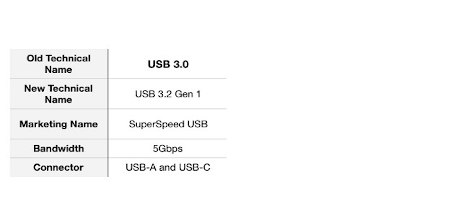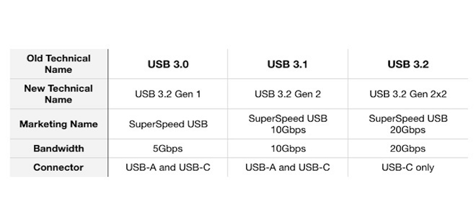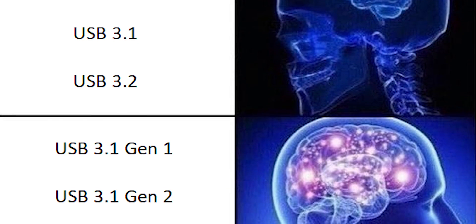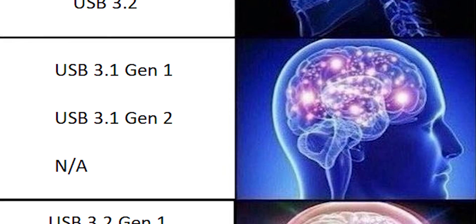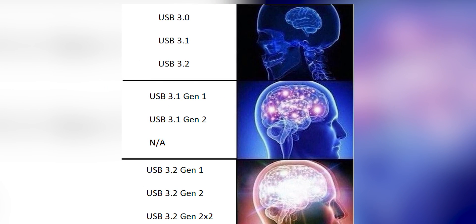At this point, USB 3.1 Gen 1 became USB 3.2 Gen 1, and USB 3.1 Gen 2 became USB 3.2 Gen 2. Additionally, USB 3.2 Gen 2x2 introduced 2-lane interfacing, bringing speeds up to 20 Gbps. So overall, we have USB 3.2 Gen 1, Gen 2, and Gen 2x2. Now, USB 4 has been added.